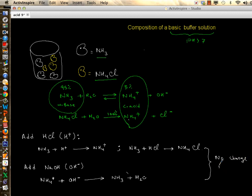So one way to make a basic buffer is to add a weak base to its own salt, such as ammonia and ammonium chloride. If you know this, you have sufficient information for your course.